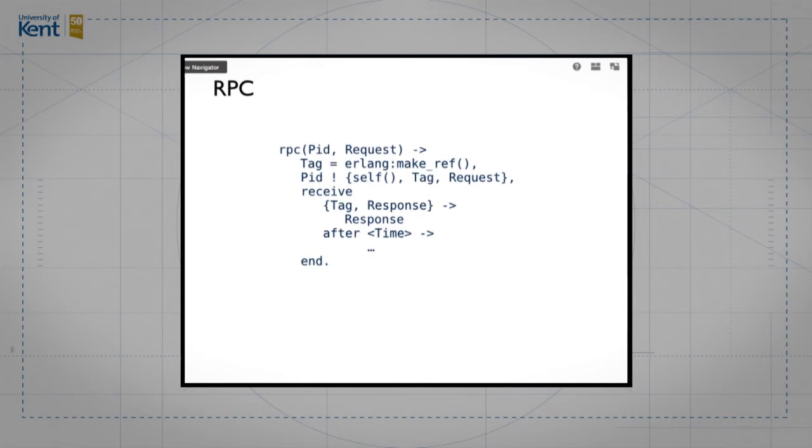And the purpose of that is to pattern match on it when the message comes back. We don't want to send a request to a computer and then get some other message and not associate the correct response with the correct message. And then we wait for a message here that has tag as its first argument. And then we return response. That's pretty simple. What could go wrong?